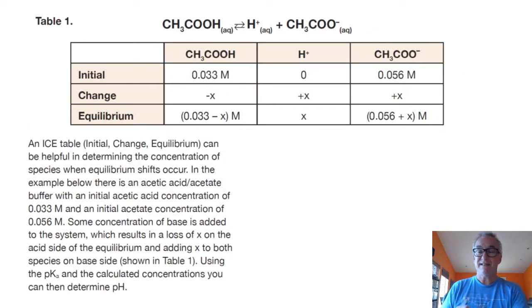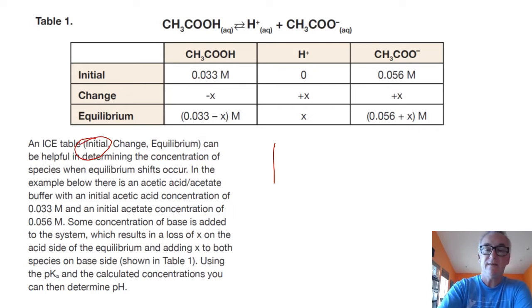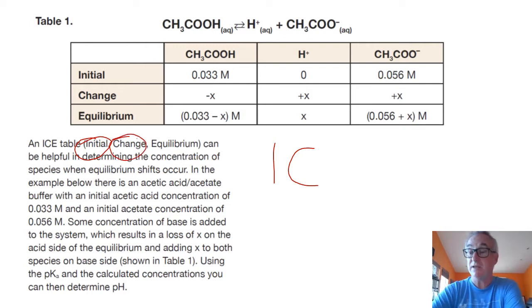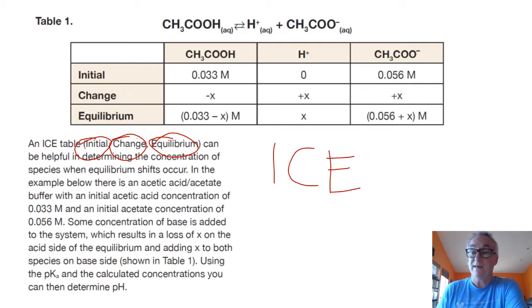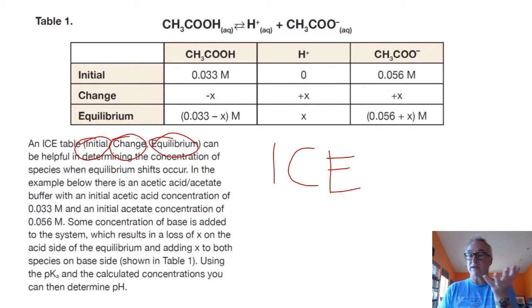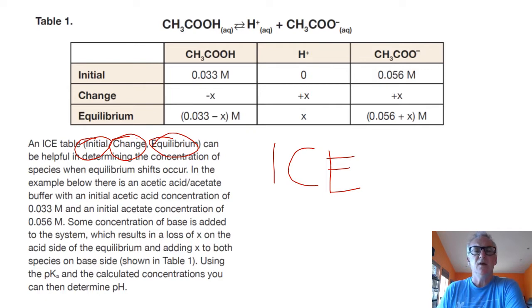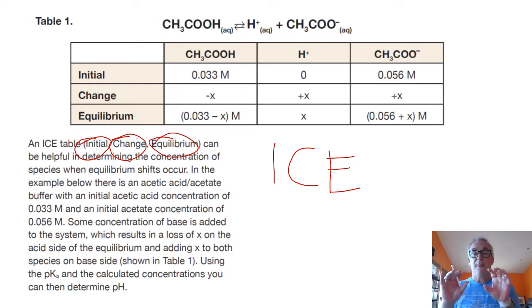Here's the introduction to what we call an ICE table. The ICE table refers to I for initial, C for the change when something's changed in the reaction, and E for what happens after the change when equilibrium is re-established. Now, equilibrium is misunderstood by a lot of students. When they hear the term equilibrium, they think that means everything is at the same concentration, and that isn't the case.